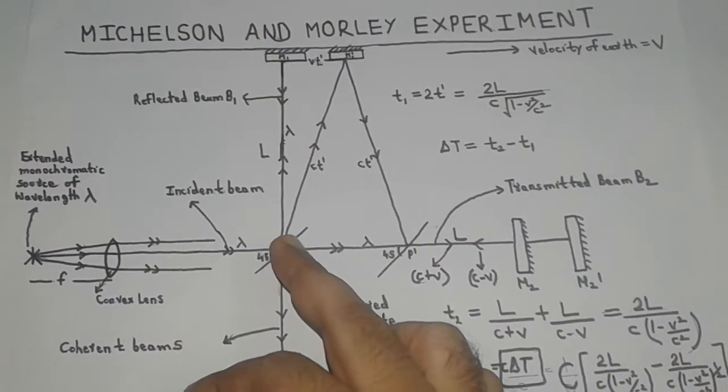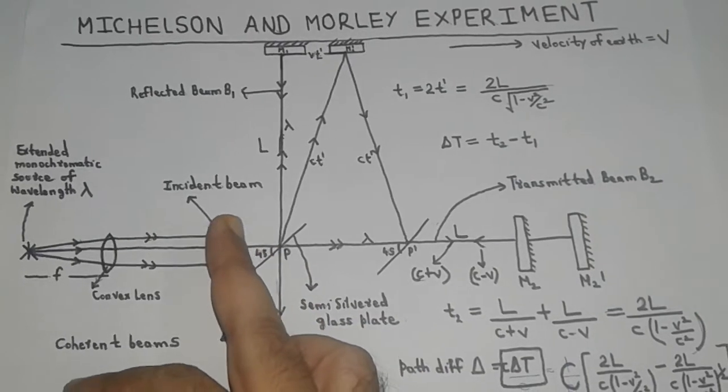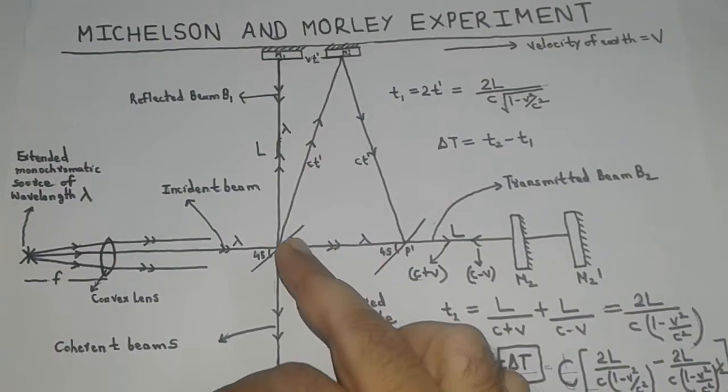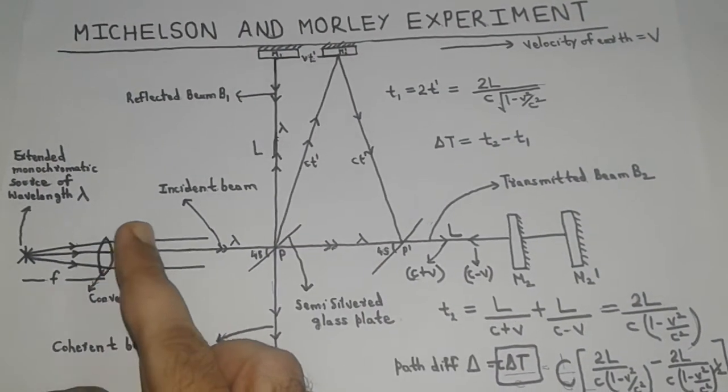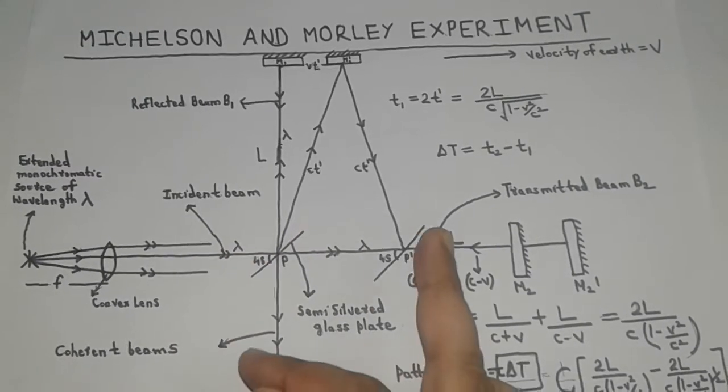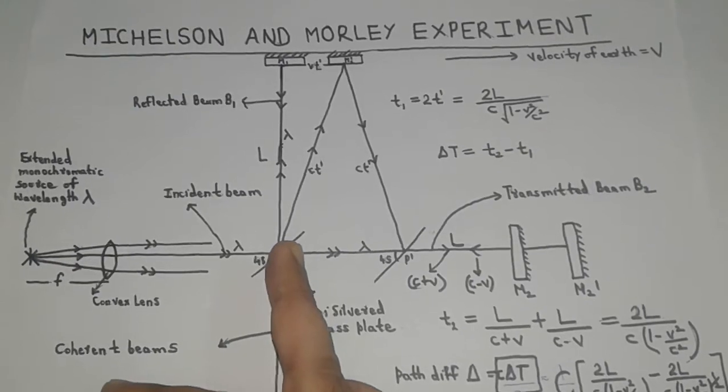But in this case, Michelson and Morley were surprised to observe that no fringe shift takes place. Hence, this observation confirms that when telescope comes in the direction of motion of earth, there is no time lag or path difference between the two beams.